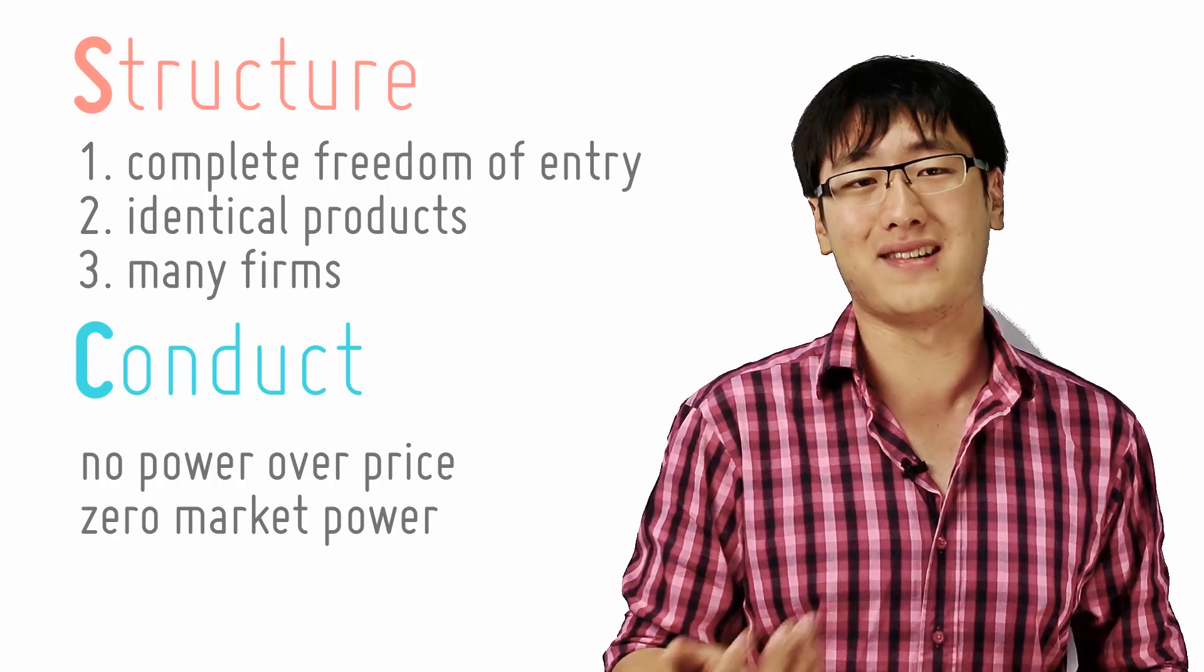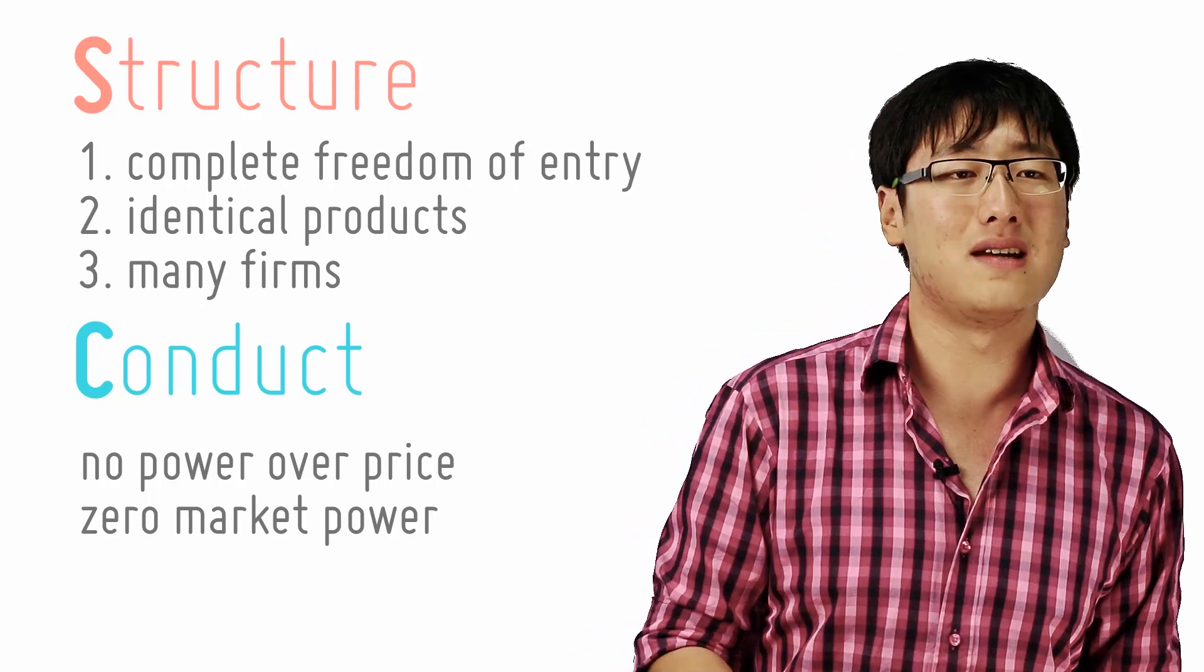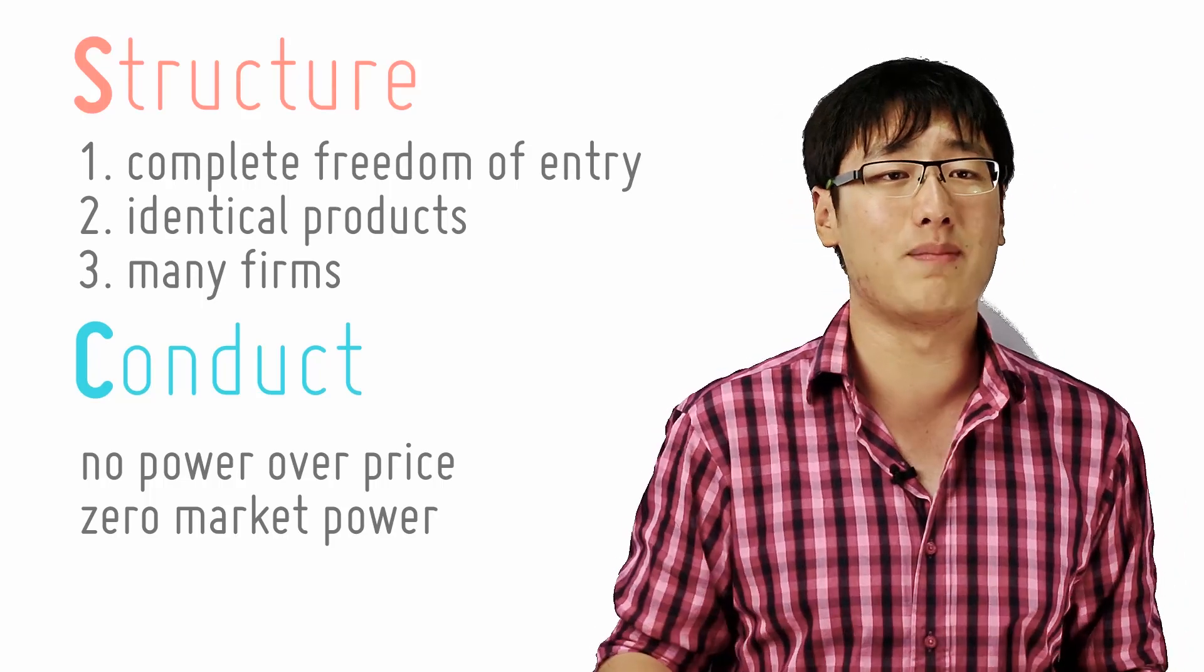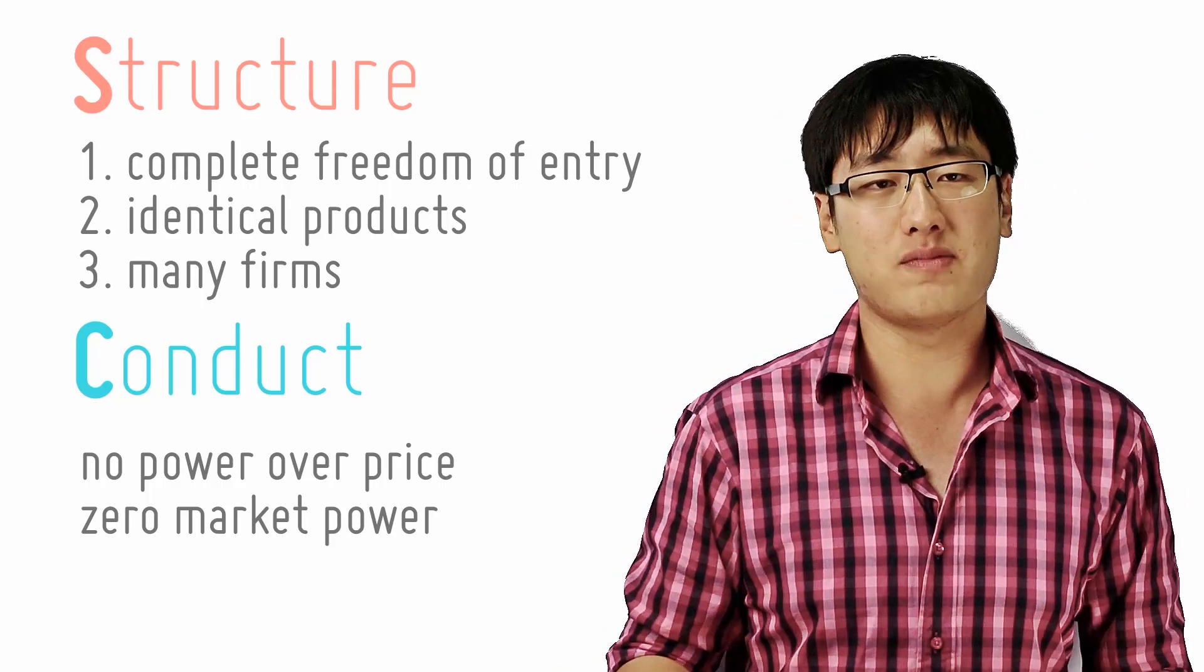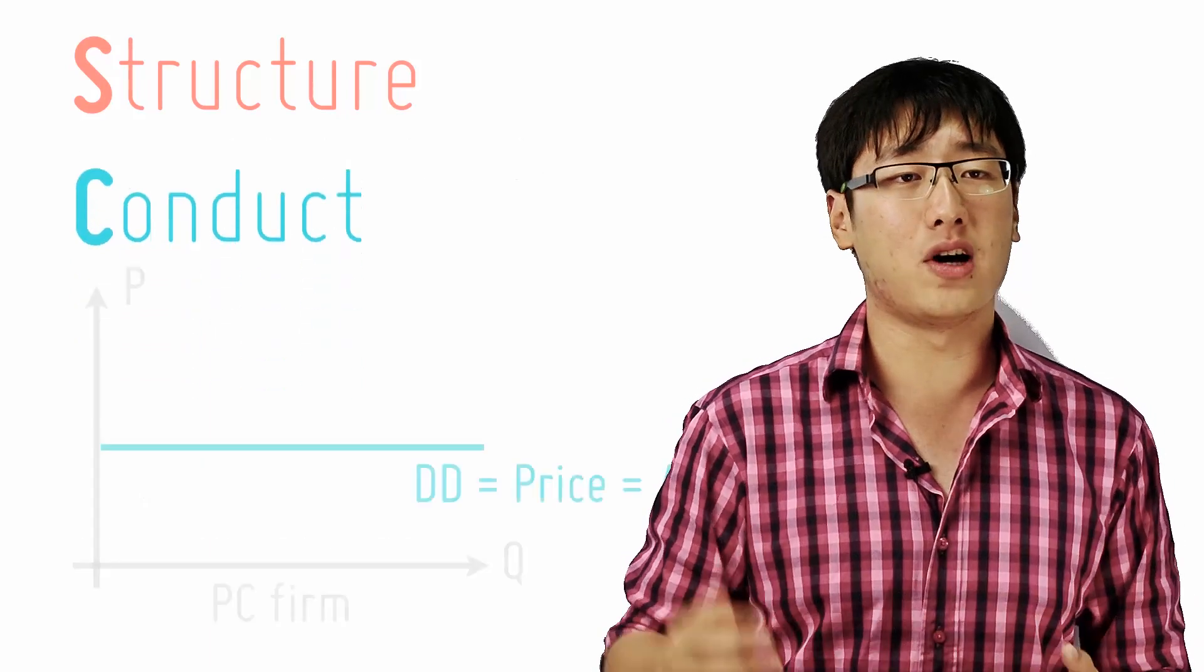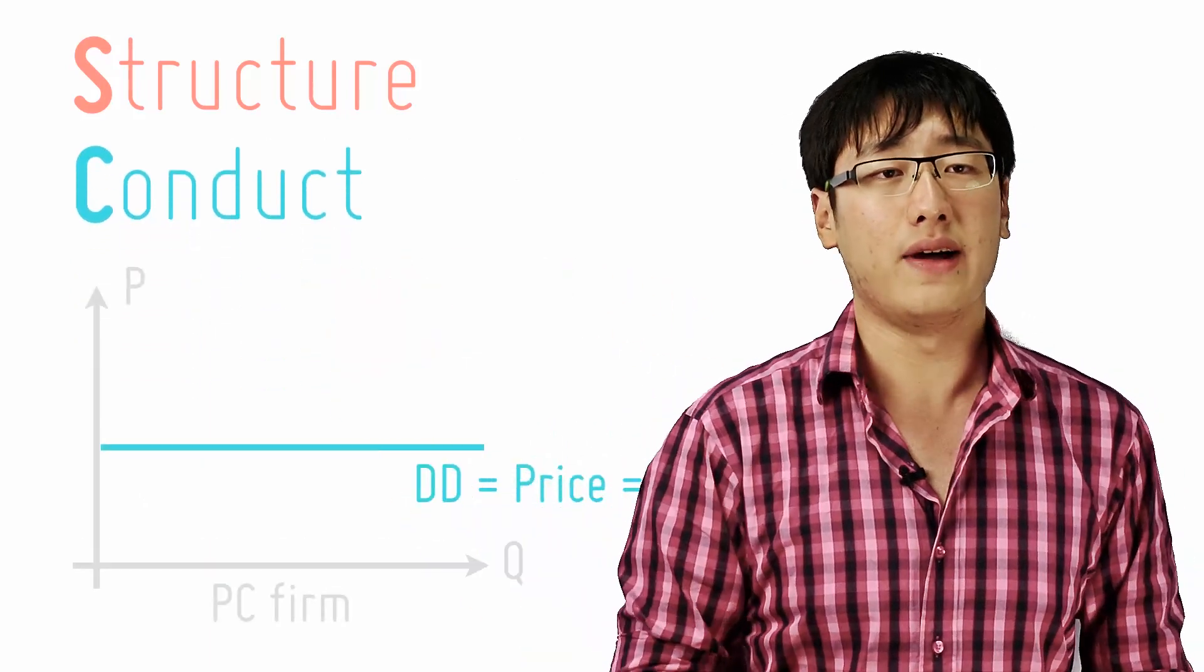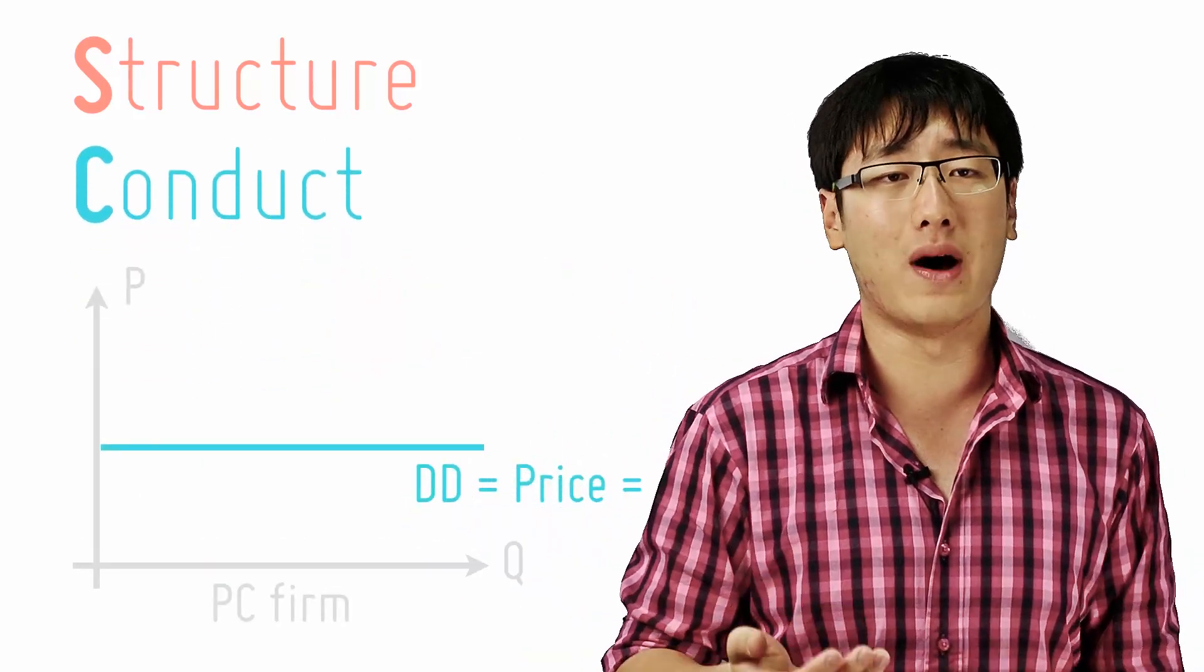So, he can't even raise the price by a single cent. He also has no incentive to lower his price because he can sell at the market price. So, actually, the demand curve of a single competitive firm is a horizontal demand curve. At every quantity, he can only sell at one single price.